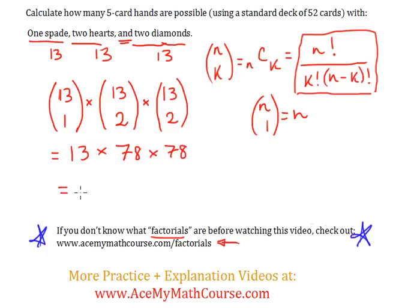So, 13 times 78 times 78 is 79,092. So, there are that many hands, 5-card hands that are possible, using 1 spade, 2 hearts, and 2 diamonds. That's it.